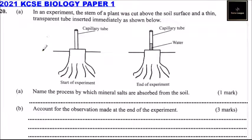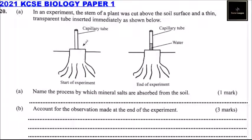Question number 20. In an experiment, the stem of a plant was cut above the soil surface and a thin transparent tube inserted immediately, as shown below. At the start of the experiment, we have a stump with a capillary tube inserted. After some time, at the end of the experiment, we have water rising through the capillary tube.